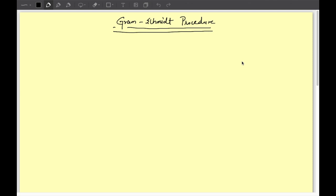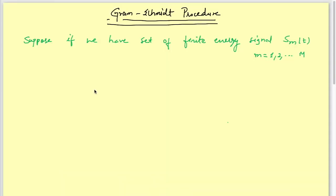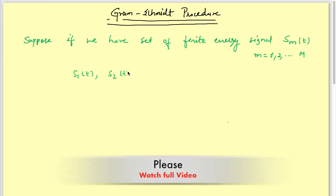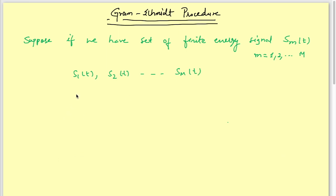Let's get started. Suppose we have a set of finite energy signals s_m(t) where m equals 1, 2, up to M — that is s1(t), s2(t), up to s_M(t). Our task is to find out the orthogonal basis functions for this set.